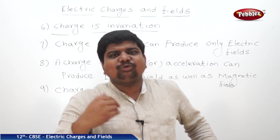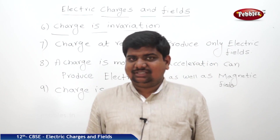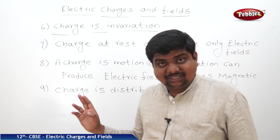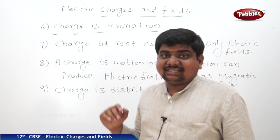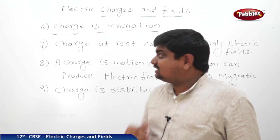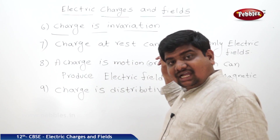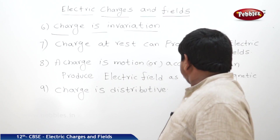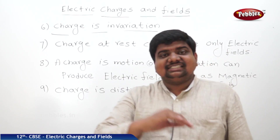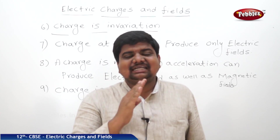These are the major properties of charge. Charge can give an induced charge — a charge can charge a body which is already neutral. Like charges repel, dislike charges attract. Charges are quantized, additive, conserved, and invariant. A charge at rest produces the electric field; charge in motion or acceleration can produce the electric field as well as magnetic field. And charge is distributive — distributed over the surface, over the volume, or along the length of a conducting body.